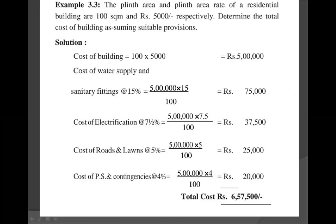Next, one by one we calculate the provisions. First, cost of water supply and sanitary fitting — each is 7.5%, so combined water supply plus sanitary fitting equals 15%. Cost of water supply and sanitary fitting at 15% equals cost of the building multiplied by 15 divided by 100, which is 5 lakhs into 15 divided by 100, equal to 75,000 rupees.